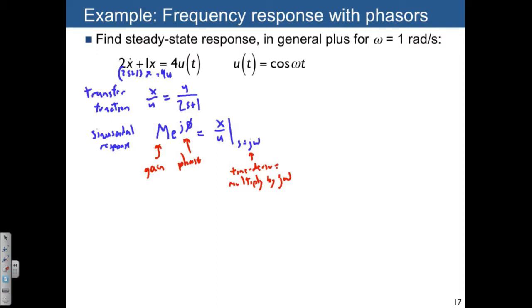So why don't we do that? We have 4/(2s + 1), plugging in s = jω. That gives us 4/(2jω + 1). This is a complex number, but it's not easy to divide by 2jω + 1. But we can separately plot the numerator and the denominator in the complex plane.